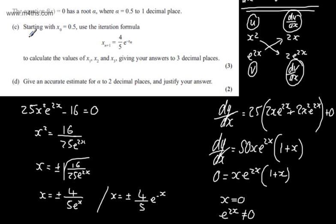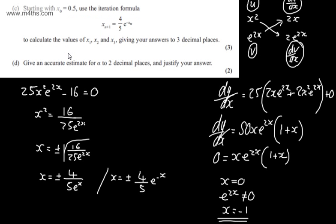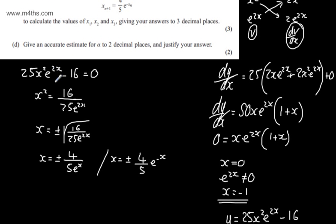In part C for three marks, it says starting with x sub 0 equal to 0.5, use the iteration formula x sub n plus 1 equals 4 fifths e to the minus x sub n to calculate the values of x1, x2, and x3, giving your answers to three decimal places. So we have x0 which is 0.5, and we need x1, x2, and x3. I'm going to set this up on the calculator and plug the values in.